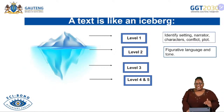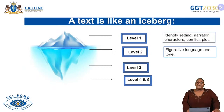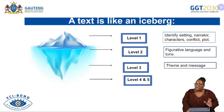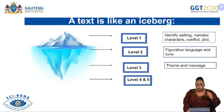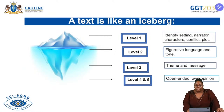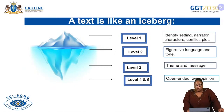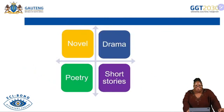Then you read for level 2, where you have to know the figurative language and the tone of a particular set work or extract. We also require you to have an understanding of level 3, which requires you to know the themes and the message of your set work. Lastly, you deal with open-ended questions where you give your own opinion of a particular extract — in the novel, the drama, the short story, or the poetry.